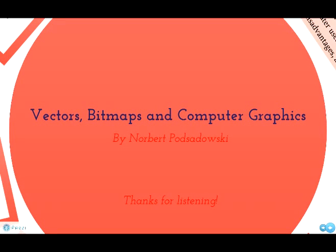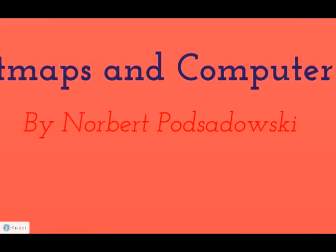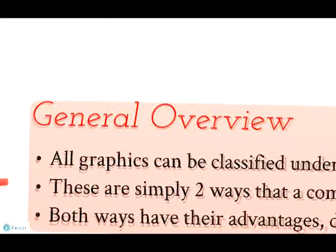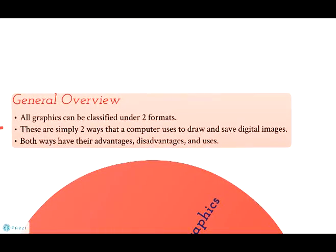Vectors, Bitmaps and Computer Graphics. General Overview. All graphics can be classified under two formats. These are simply two ways that a computer uses to draw and save digital images. Both ways have their advantages, disadvantages and uses.